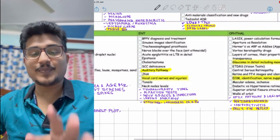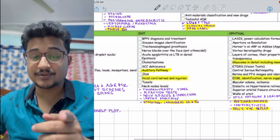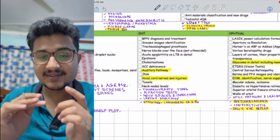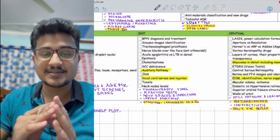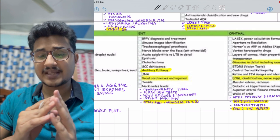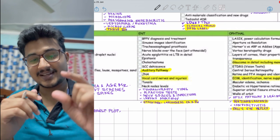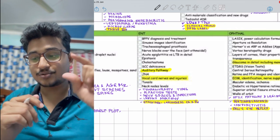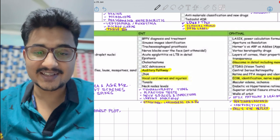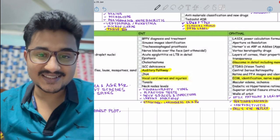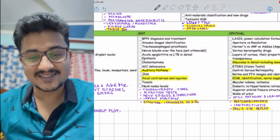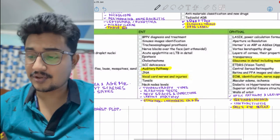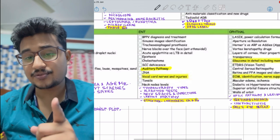In ENT, as I said in my previous video, auditory pathway has been asked - in these two years about eight questions have been asked. The same question has been asked, the pathway only, in each INICET two times. It's very much important. Till now I don't know how much the trend will continue, but for now you study.